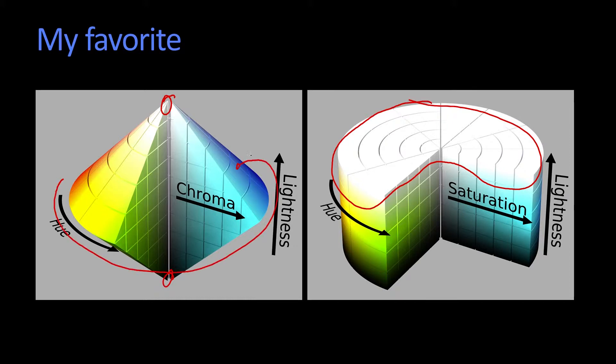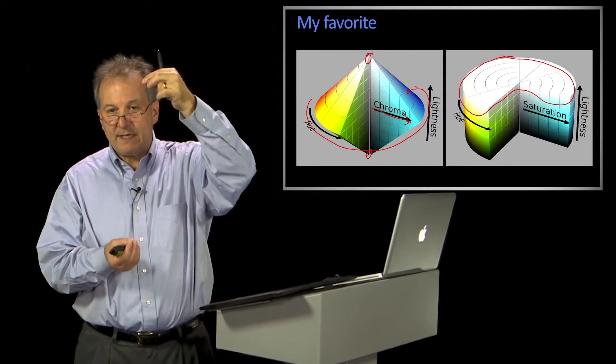As you spin around, the double cone gives you the hue. And as you get further out, they call it chroma. I actually like calling it saturation better. It doesn't really matter too much, but I tend to think of it as a cone.